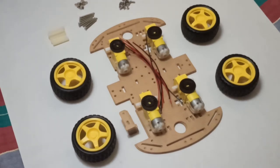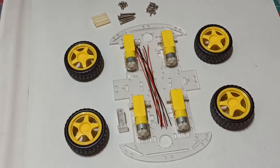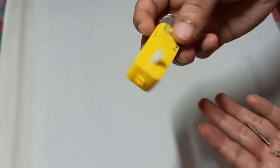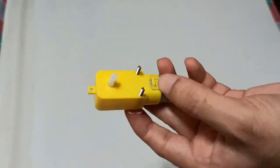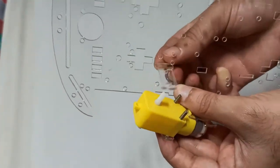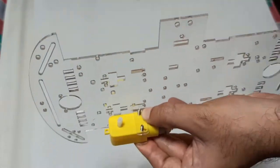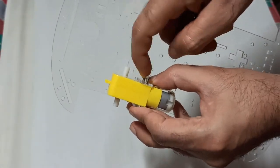With the help of motor supporting parts, attach the motors with the main body. In this kit, top and bottom part are similar so we can use any one of them.